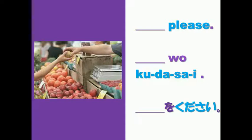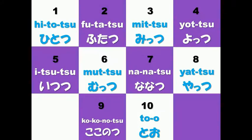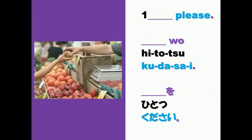But that is weird because they don't know how many you want, so let's learn some numbers: hitotsu, futatsu, mitsu, yotsu, itzutsu, mutsu, nanatsu, yatsu, kokonotsu, to. Now when you want something in numbers, you just need to put the number behind o, like: o hitotsu kudasai.